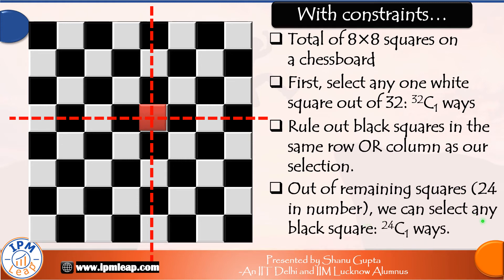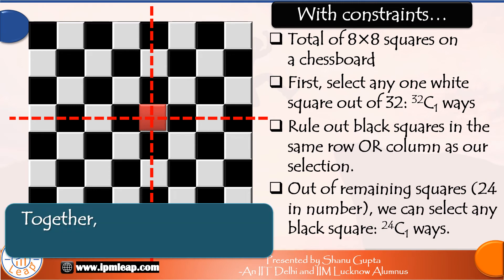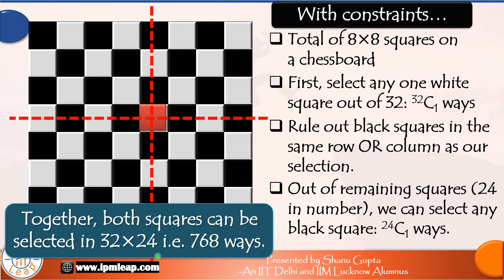Therefore, together one white and one black square can be selected in 32 into 24, that is 768 ways.